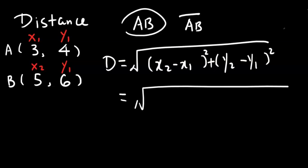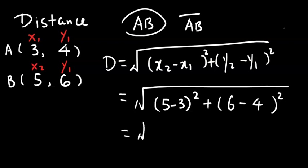So I'm going to plug in like this. 5 minus 3, close it, square it. 6 minus 4, close it, square it. 5 minus 3 is 2, 2 squared is 4. 6 minus 4 is 2, 2 squared is 4. And we have square root 8.